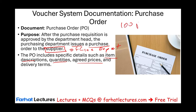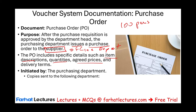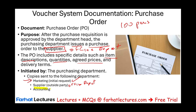The purchasing department — a different department from marketing — sends one copy back to the marketing department confirming the request was placed, one copy to the supplier (Office Depot), one copy to the accounting department, and one copy to the receiving department, because that department will receive the 100 pens.